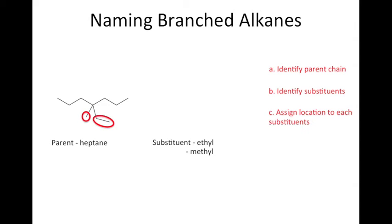The third step is to assign locations to the substituents. To do this, the parent chain needs to be numbered in the direction that will give the first substituent the lowest locant. In this particular example, numbering the parent chain from left to right or from right to left will give both the ethyl and the methyl group the same locant, carbon number 4.